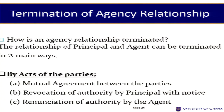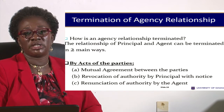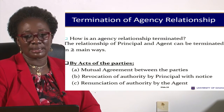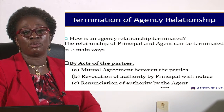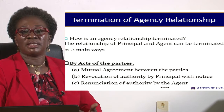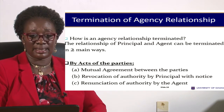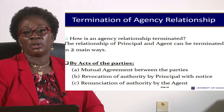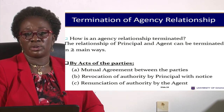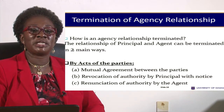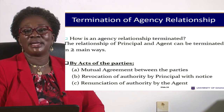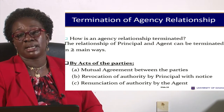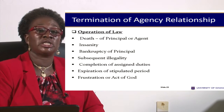There are two main ways to terminate a principal-agency relationship. The first is by the acts of the parties themselves. They can do so by mutual agreement, or the principal may give notice to the agent that he is revoking the authority granted, or the agent may renounce the authority given to him by the principal. By doing any of these, the relationship is brought to an end.